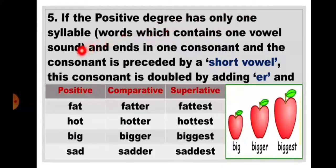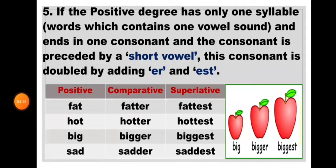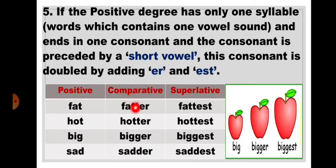Rule 5: If the positive degree has only one syllable — meaning the word contains one vowel sound — and ends in one consonant that is preceded by a short vowel, this consonant is doubled before adding ER and EST. For example: fat — it has only one vowel A, so we double the last consonant T and add ER to get fatter, and double T again and add EST to get fattest. Hot → hotter → hottest. Big → bigger → biggest. Sad → sadder → saddest.